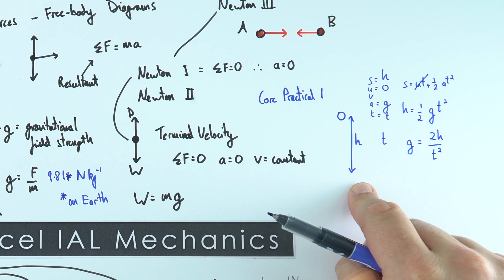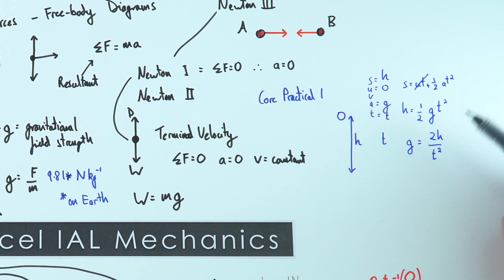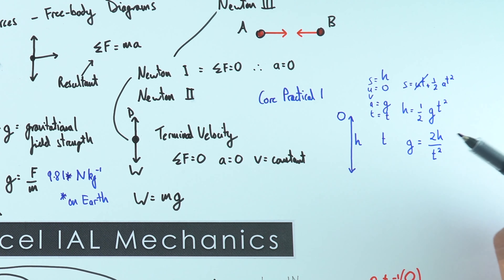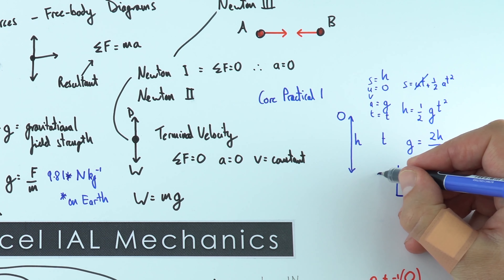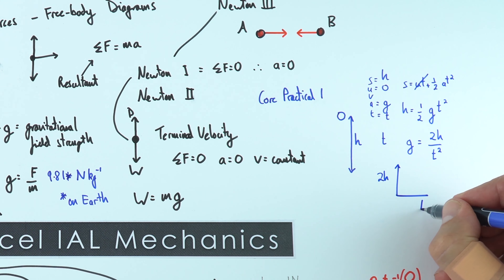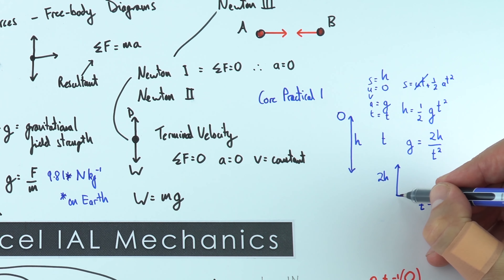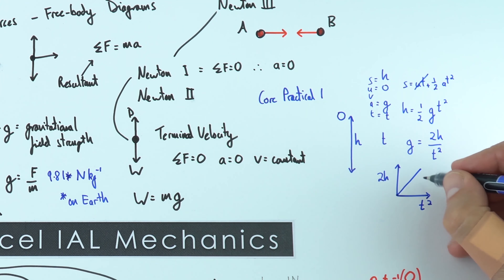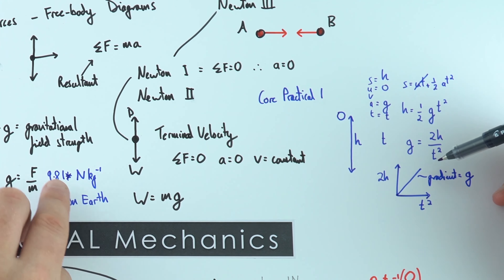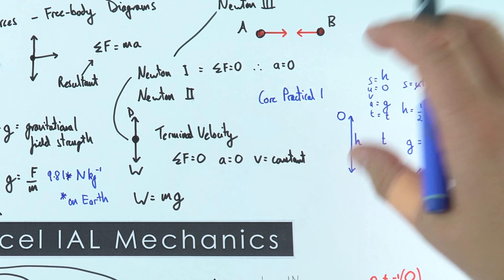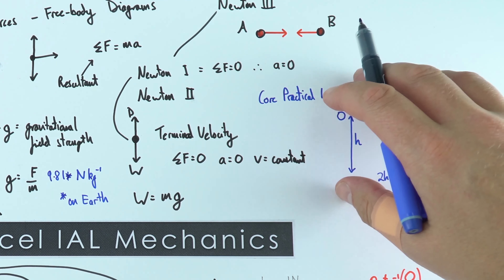The setup may vary in school, but if we have measurements of height and values of t², we can find g. By altering the drop height and recording the time, we can plot a graph with 2H on the y-axis and t² on the x-axis. This should give a straight line through the origin, and the gradient of that line equals the acceleration due to gravity, which should be around 9.81. This is a core practical you should see demonstrated or try yourself in school.